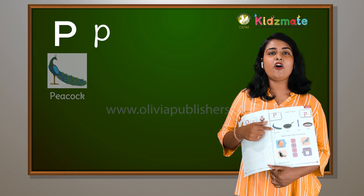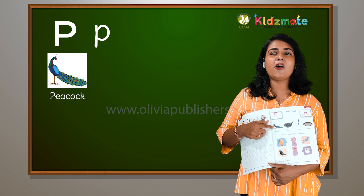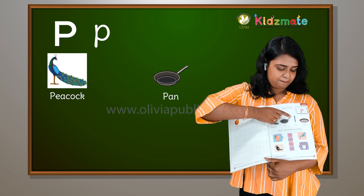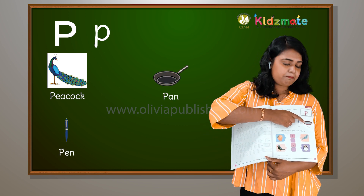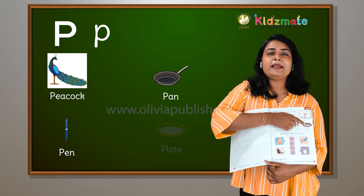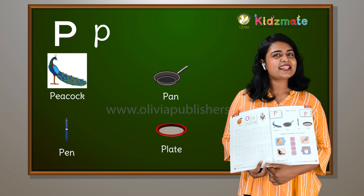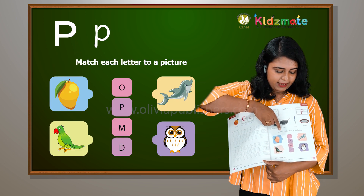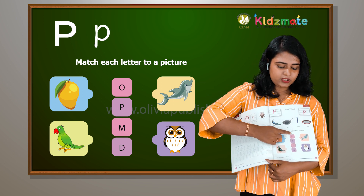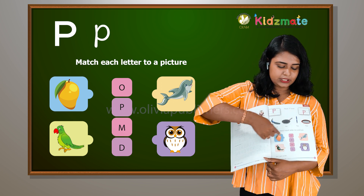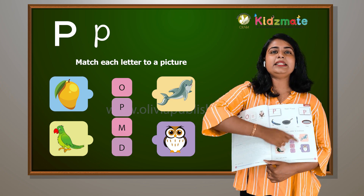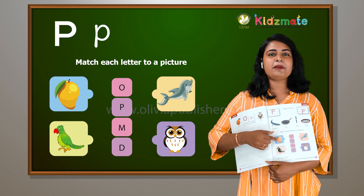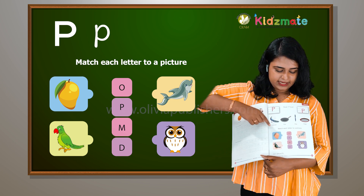So you have P for peacock, P for pan, P for pen, and P for plate. Then let's do the activity — match each letter to a picture. You have 4 letters and 4 pictures. You will match these letters and pictures.